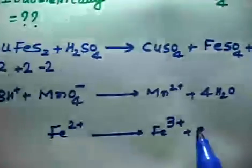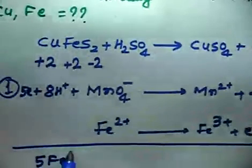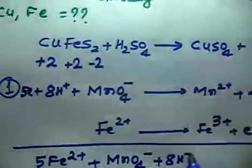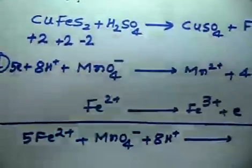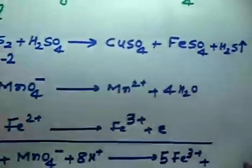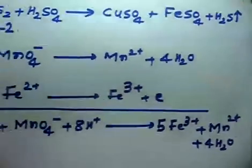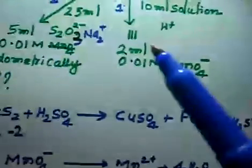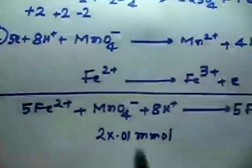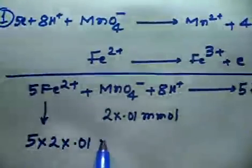This side you will have 1 electron. So if you multiply by 5, you will have 5Fe²⁺ plus MnO₄⁻ plus 8H⁺ giving 5Fe³⁺ plus Mn²⁺ plus 4H₂O. Now you can do the calculation. Moles of MnO₄⁻ = 2 × 0.01 millimoles. Since 1 mole reacts with 5 moles, moles of Fe²⁺ = 5 × 2 × 0.01 millimoles.